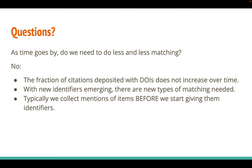Secondly, whenever a new identifier emerges, all of a sudden we need another type of matching, such as for example grant matching. Also note that we typically first collect a lot of mentions of items without identifiers, such as funding information, and only then we start assigning identifiers to mentioned items. This means that when a new identifier appears, we typically already have tons of messy mentions that have to be matched.